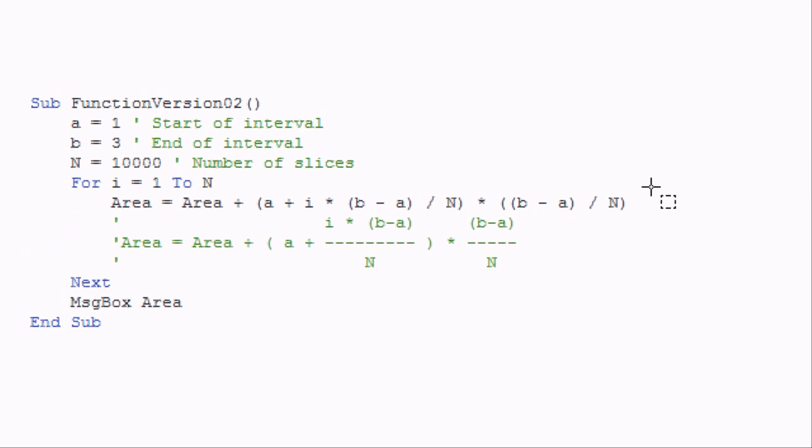Okay, there we go. So the first thing we want to do is get that plus sign out of the parentheses. So we're going to have A times B minus A divided by N.